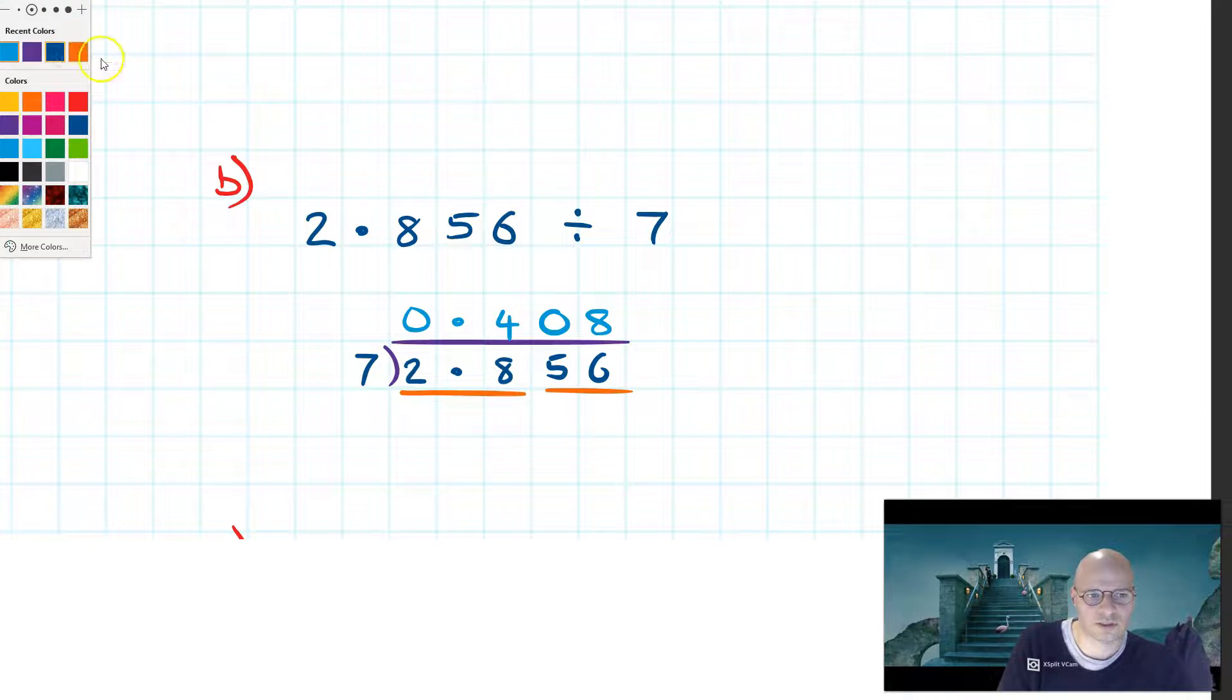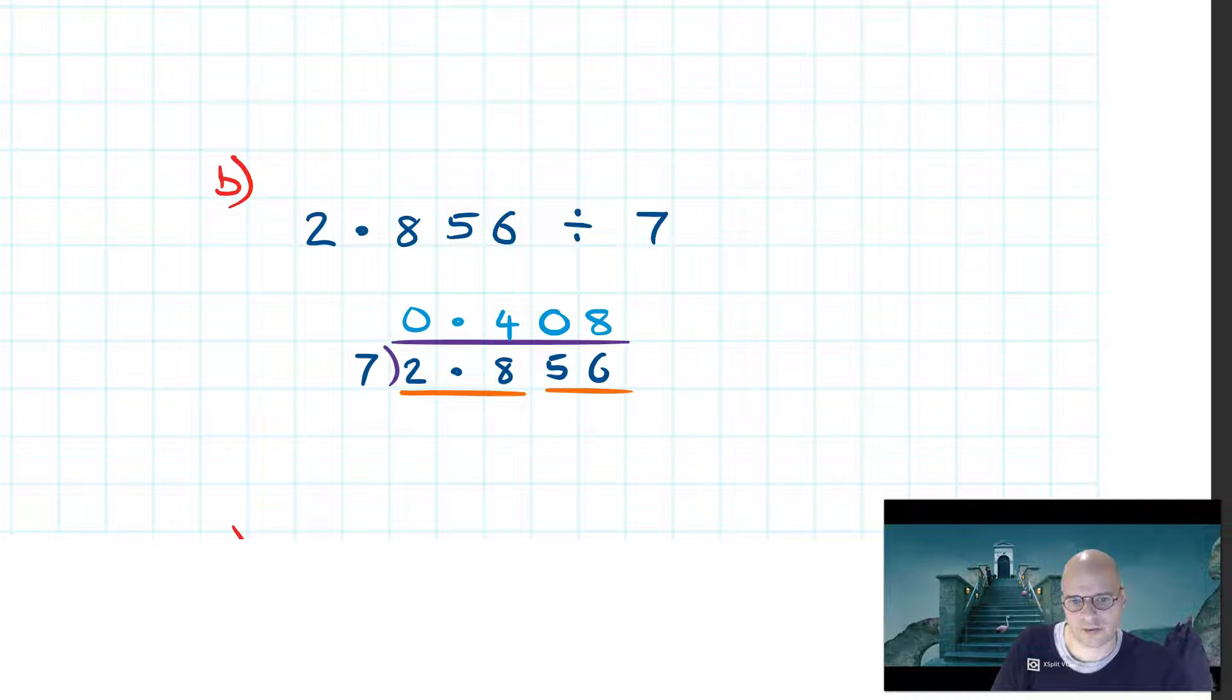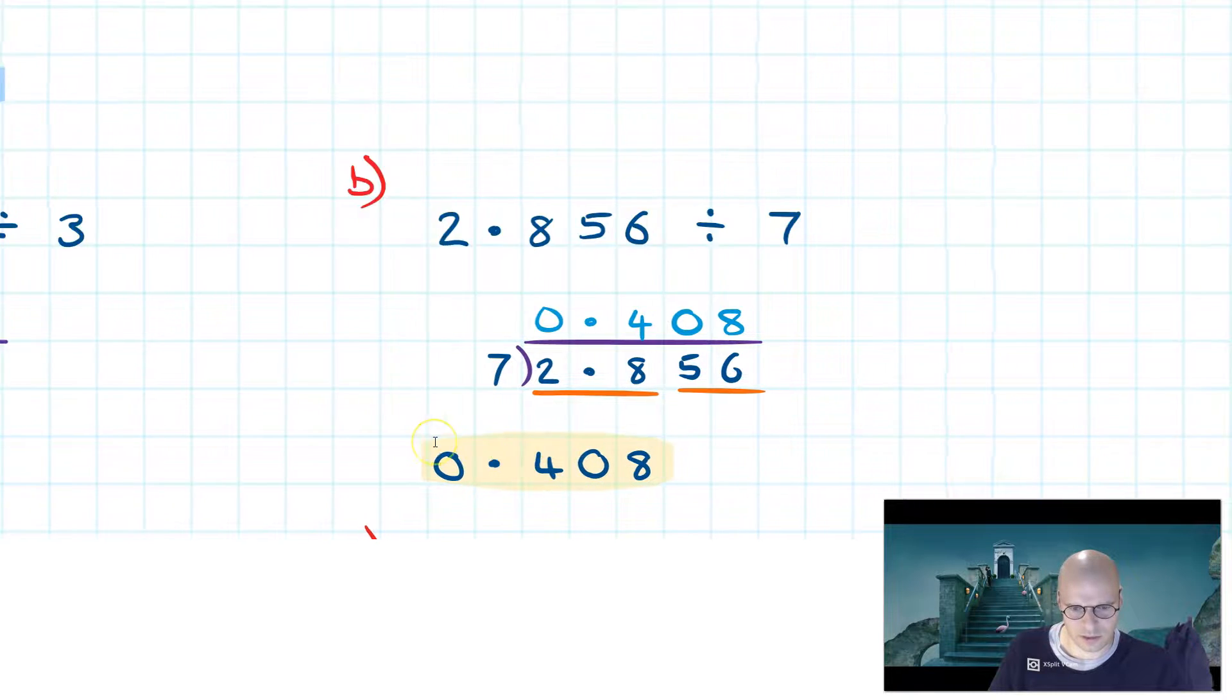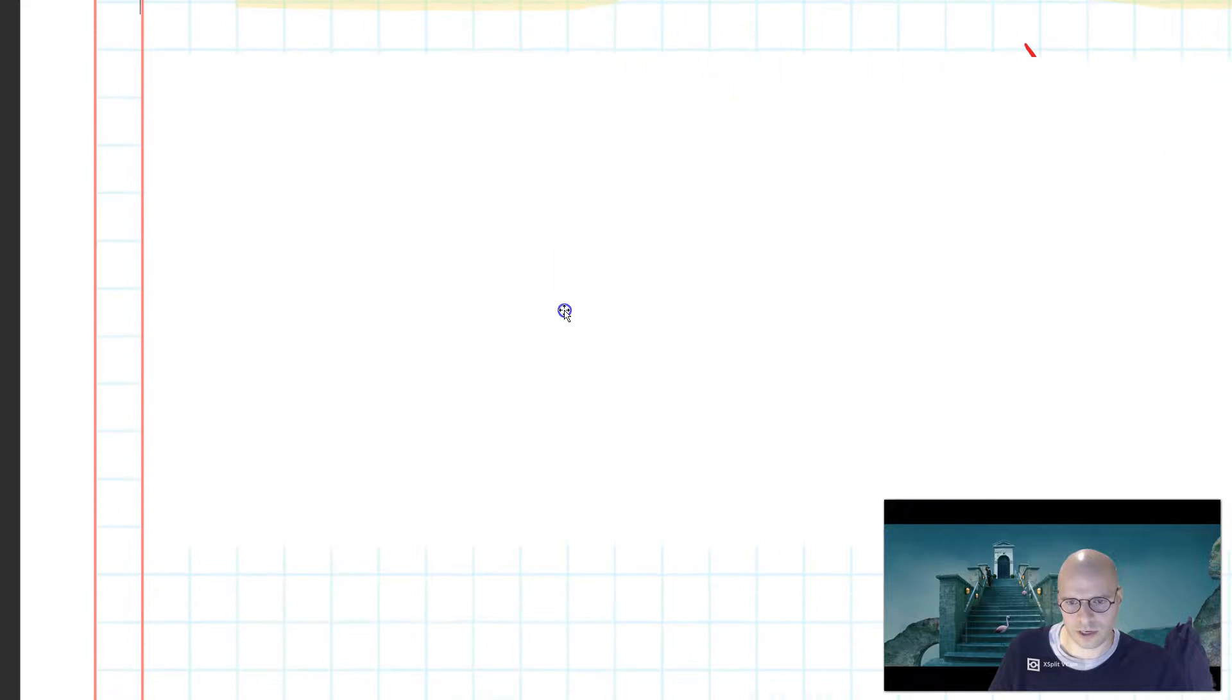Therefore the result of 2.856 divided by 7 is simply 0.408. Nice and simple once again. In this instance the complexity comes from the friendship bridge we're putting in here. So when that doesn't fit, we build a friendship bridge and then look at the two numbers together. As a disclaimer, it's not actually called a friendship bridge but that's what we'll call it.